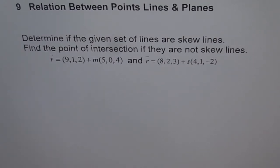Chapter 9, relation between points, lines and planes. Determine if the given set of lines are skew lines. Find the point of intersection if they are not skew lines. And we are given two sets of lines here: r = (9,1,2) + m(5,0,4) and r = (8,2,3) + s(4,1,-2).